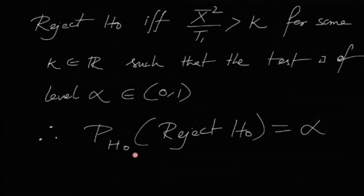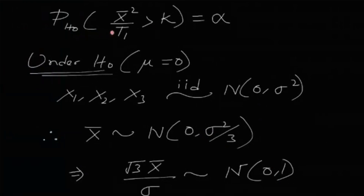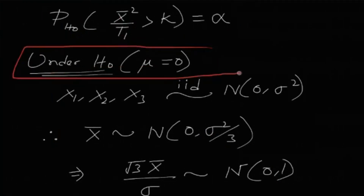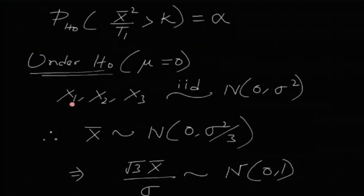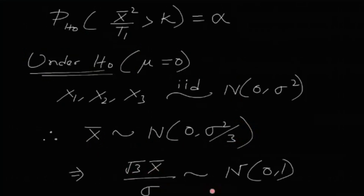Under H0 (μ=0), x1, x2, x3 are IID Normal(0, σ²). Therefore x̄ ~ Normal(0, σ²/3), and standardizing: √3·x̄/σ ~ Normal(0,1). Squaring, 3x̄²/σ² ~ χ²(1).